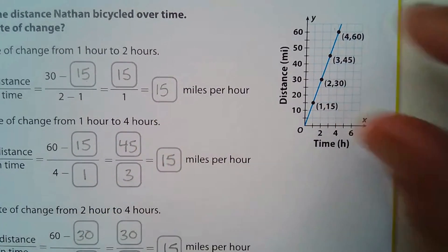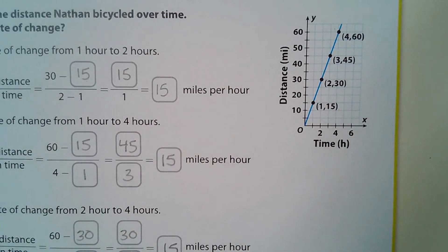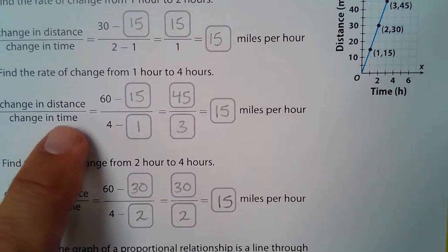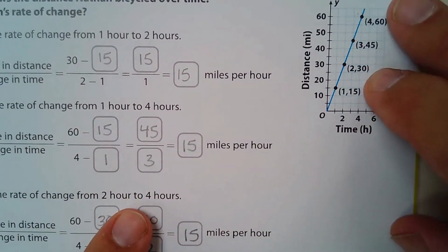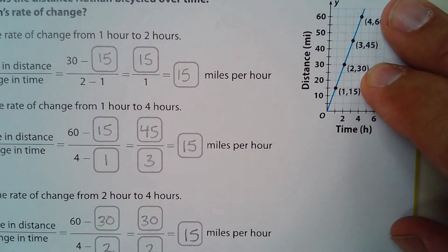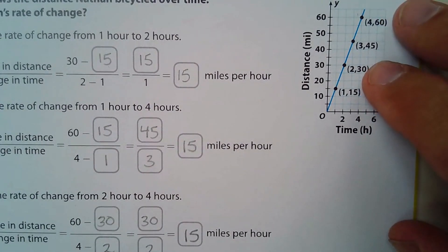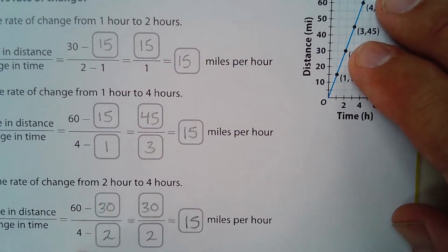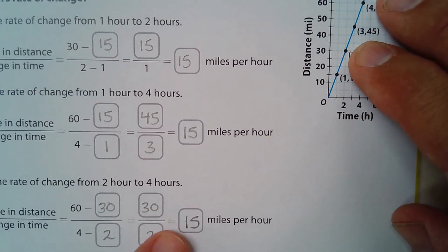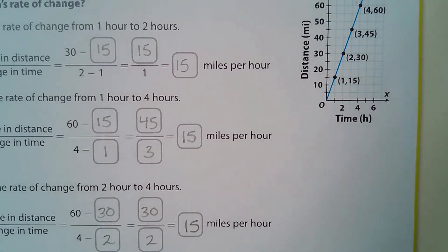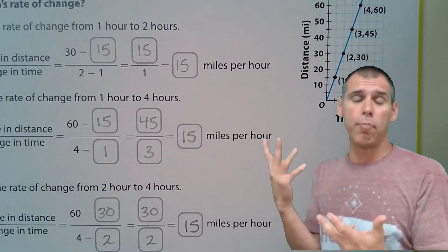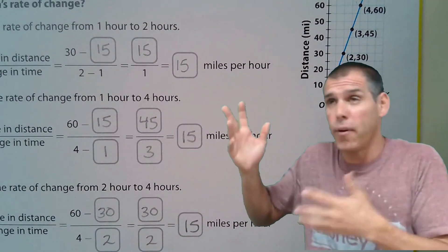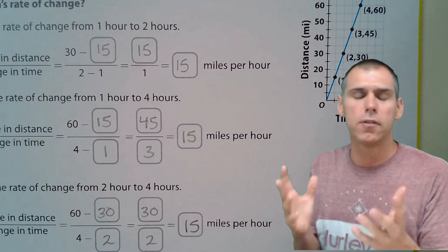From two hours to four hours: the change in y is 60 minus 30, and the change in x is 4 minus 2 — that's 30 divided by 2, which is still 15. Same rate of change with different points. Any two points you choose — first and fourth, third and fourth — it doesn't matter. As long as it's a straight line, you will have a constant rate of change.